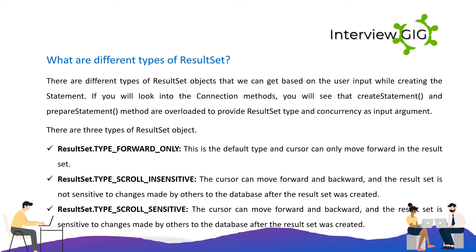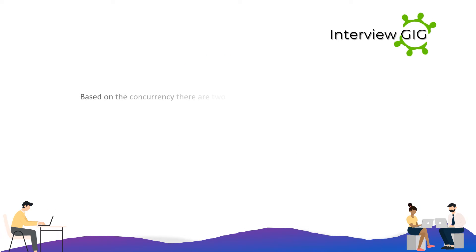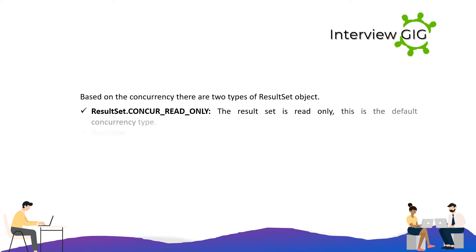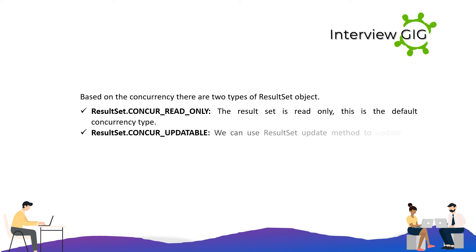Based on concurrency there are two types of ResultSet object: ResultSet.CONCUR_READ_ONLY — the ResultSet is read-only, this is the default concurrency type; and ResultSet.CONCUR_UPDATABLE — we can use ResultSet update methods to update the row data.